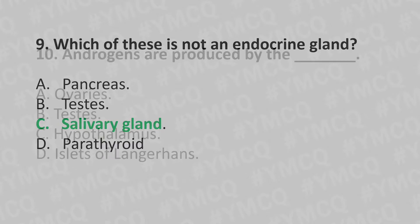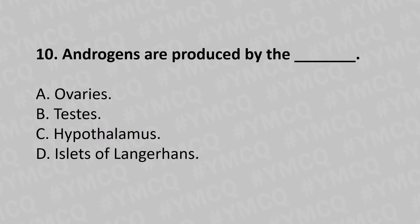Moving to our tenth question. Androgens are produced by the: Option A: ovaries. Option B: testis. Option C: hypothalamus. Option D: Islets of Langerhans. And the answer is Option B: testis.